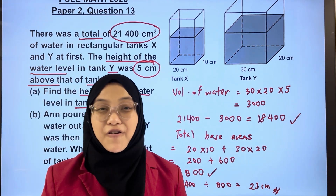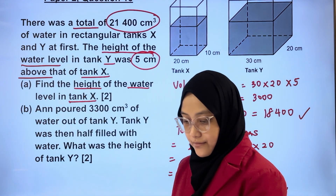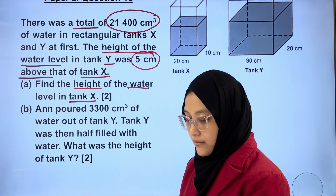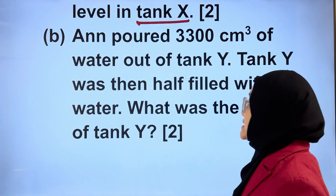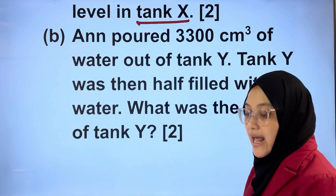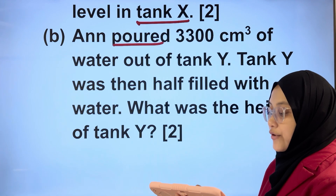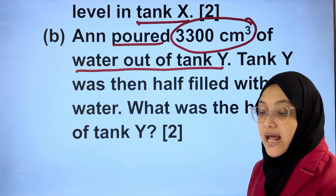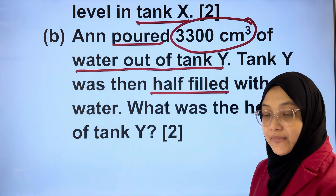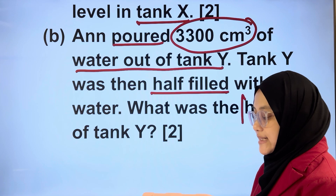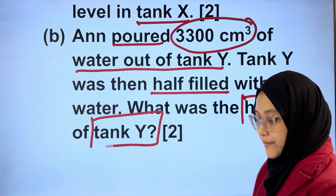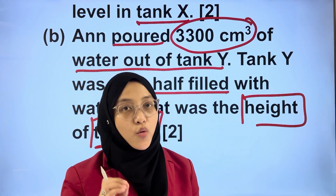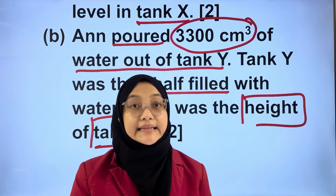Now let's solve part B. What happens in part B? 3,300 cubic centimetres of water was removed out of tank Y. Tank Y was then half-filled with water. The question wants to know the height of tank Y. Let us first find out what was the total volume of water in tank Y.